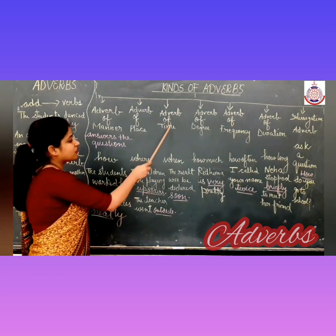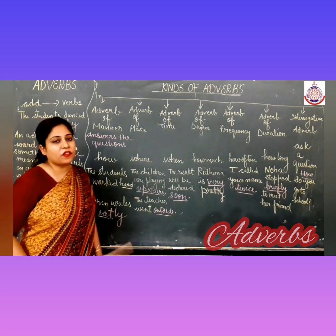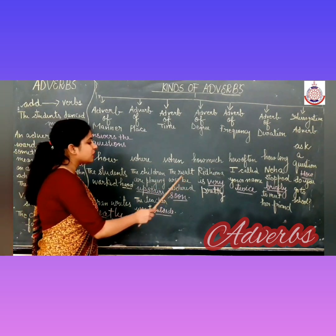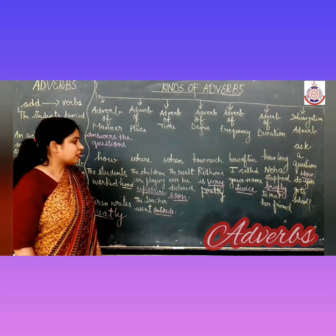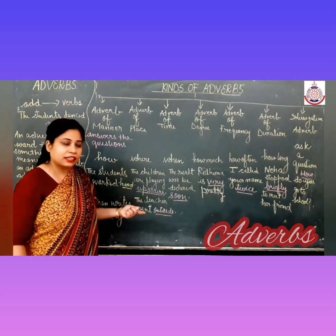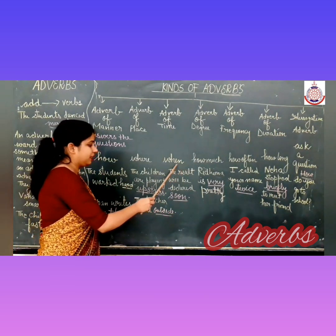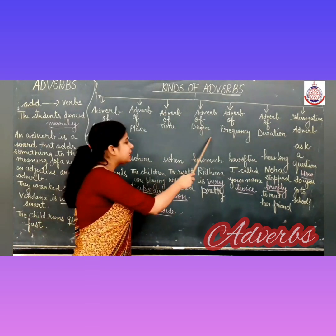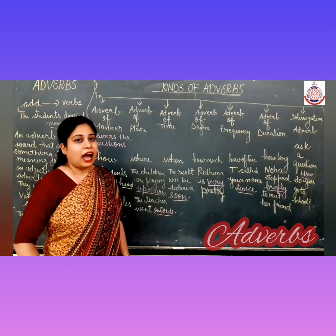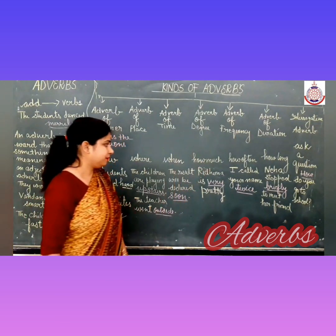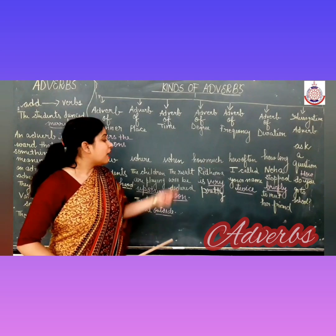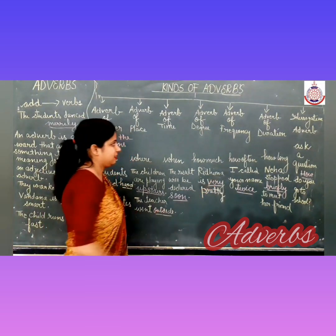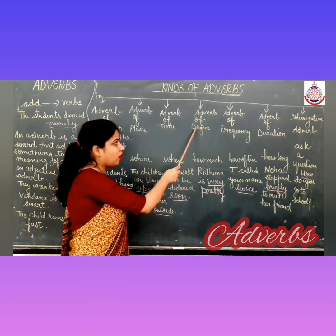Next, adverb of time. Adverb of time answers the question 'when'. For example, the result will be declared soon. When will it be declared? Soon. So here 'soon' is adverb of time. Next, adverb of degree. Adverb of degree answers the question 'how much'. For example, Rhythima is very pretty. How much pretty? Very. So here 'very' is adverb of degree.